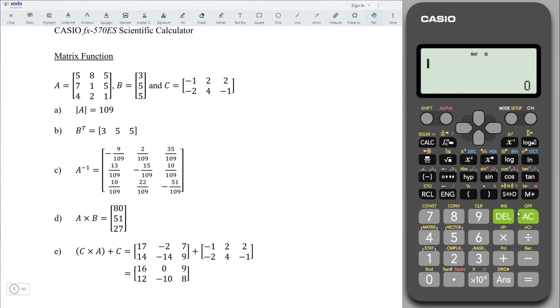And now for matrix C. Press on shift 4. 1 to define matrix. Select 3 for matrix C. This is a 2 by 3 matrix. Select 4. Enter the values. Negative 1, equal, 2, equal, 2, equal. Negative 2, 4, negative 1. Press on AC.